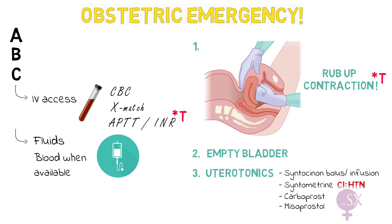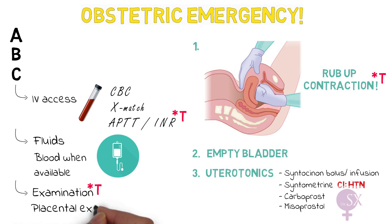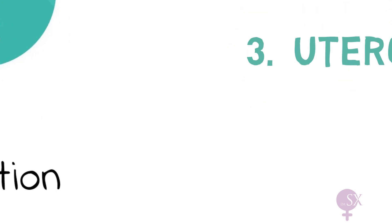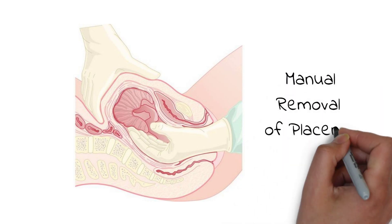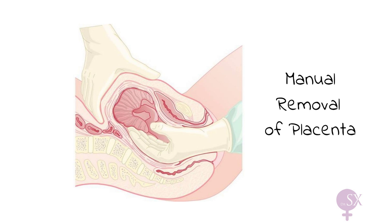While waiting for medications to work, we assess the other T's. We examine for any perineal, vaginal, or cervical tears and suture any identified tears. We perform placental examination to ensure the placenta is complete. If the placenta is not complete or has not been delivered, a manual removal of the placenta is performed — the fist is inserted inside the uterus to remove the placenta manually while the patient is properly anesthetized.